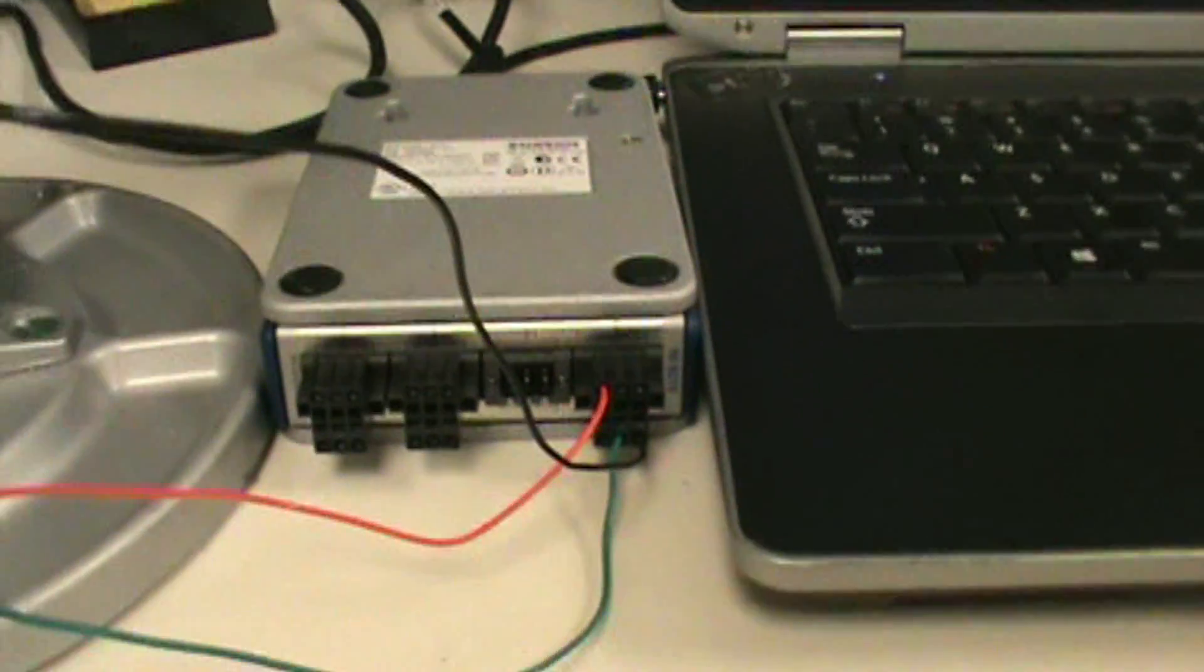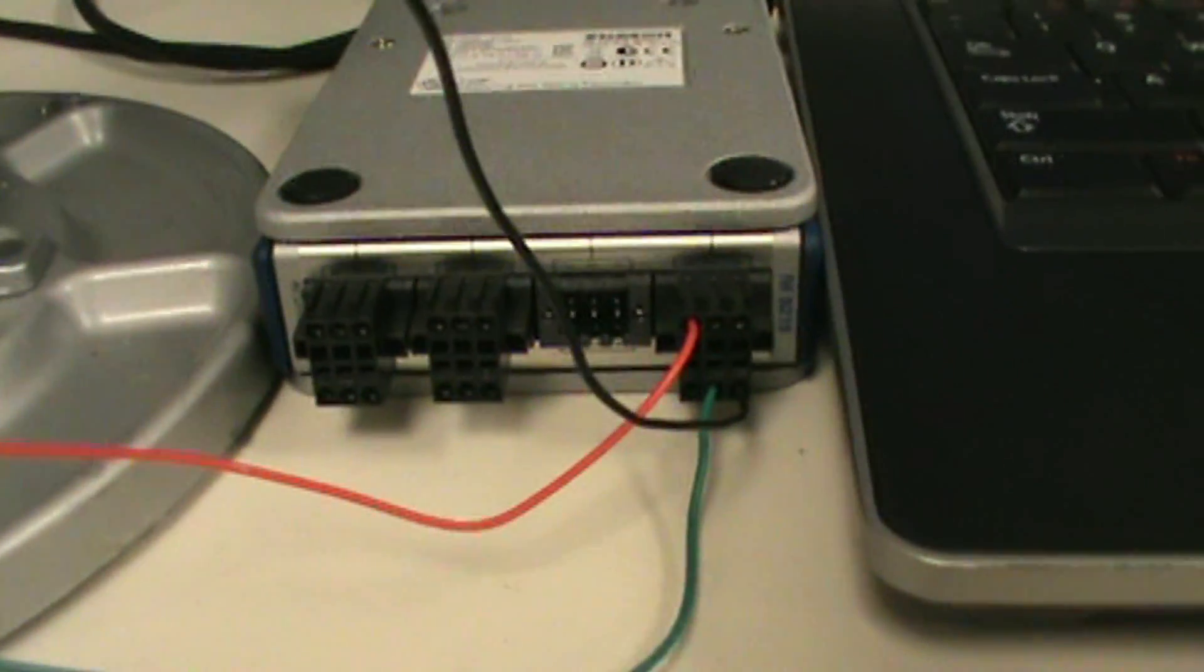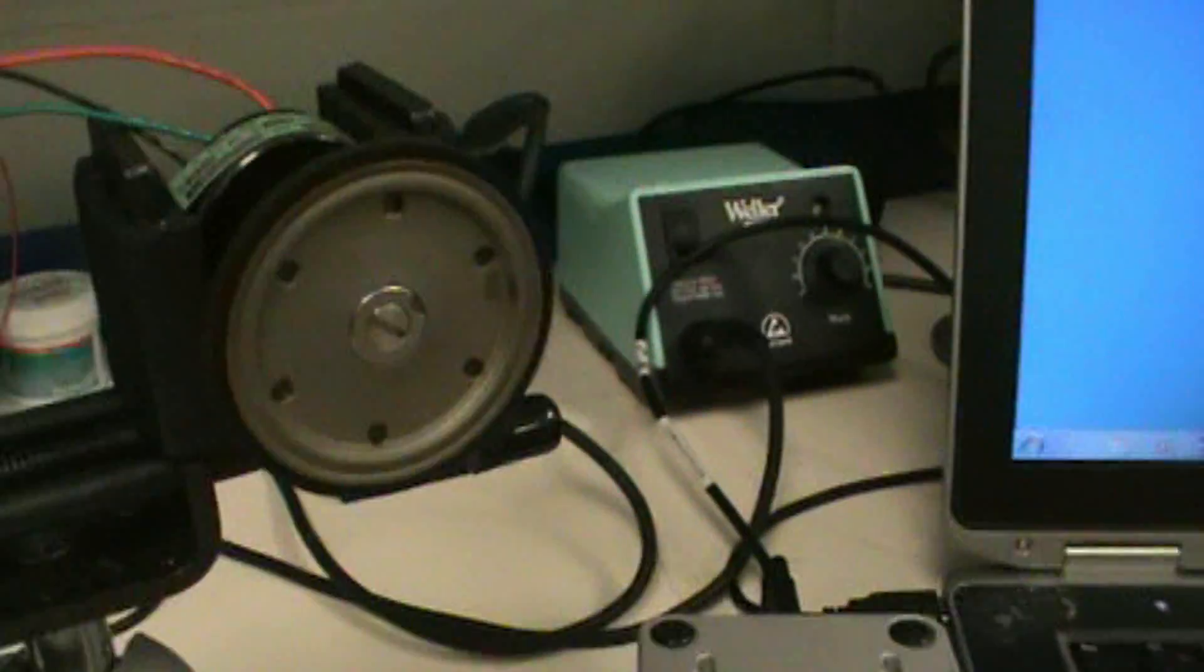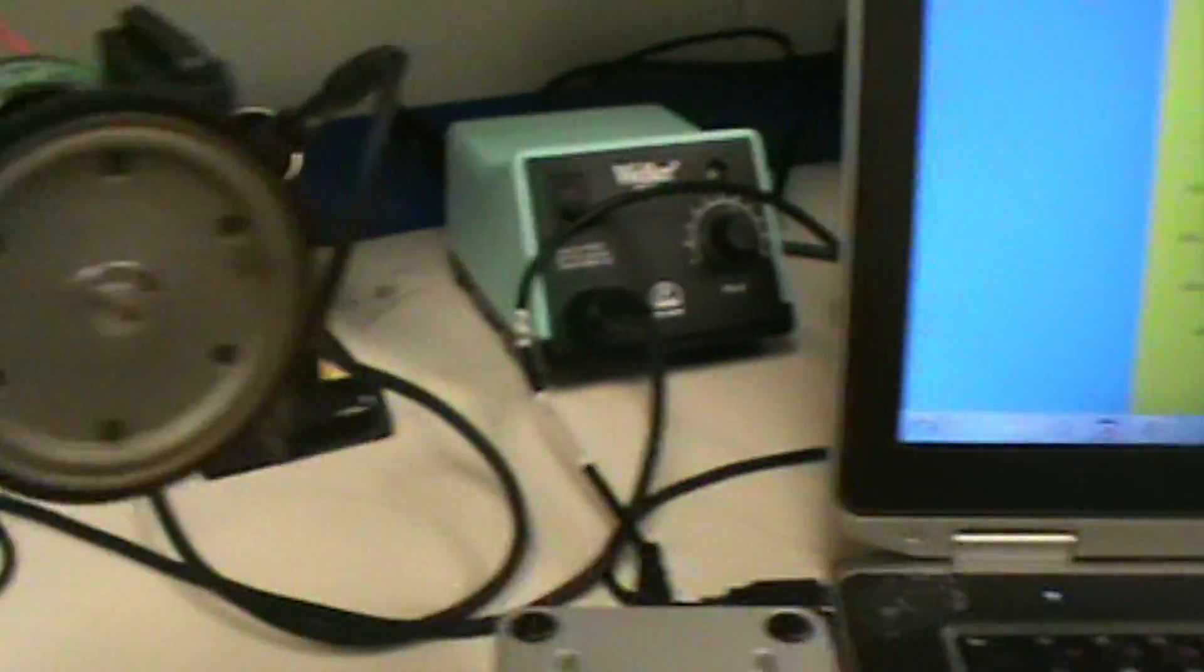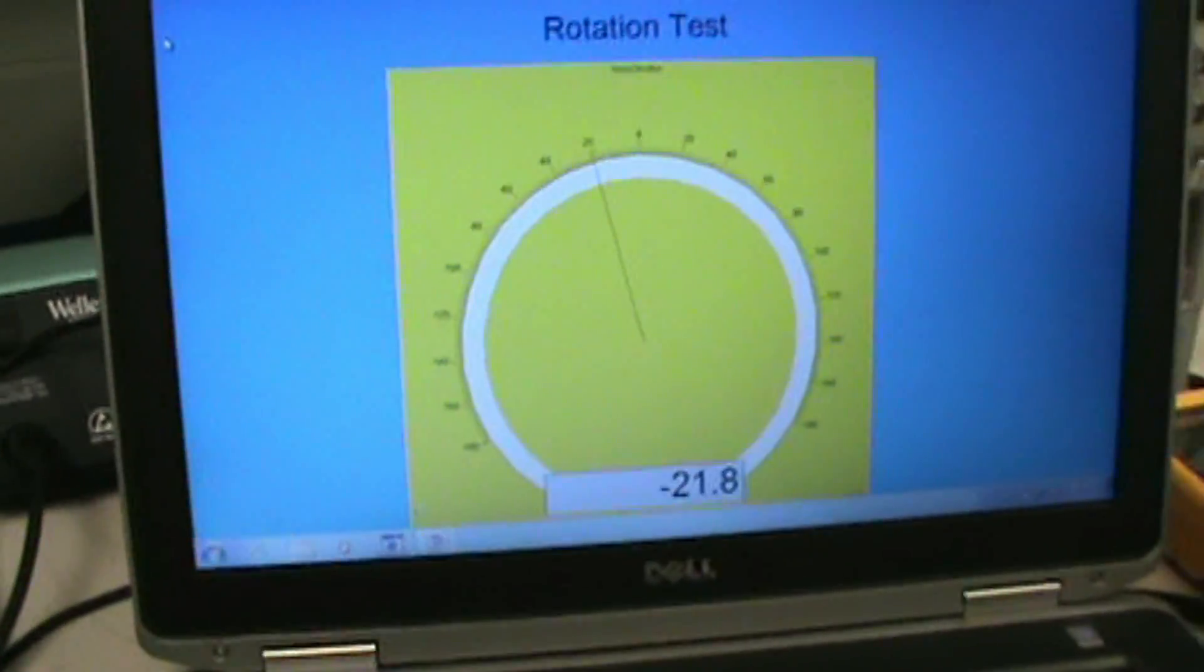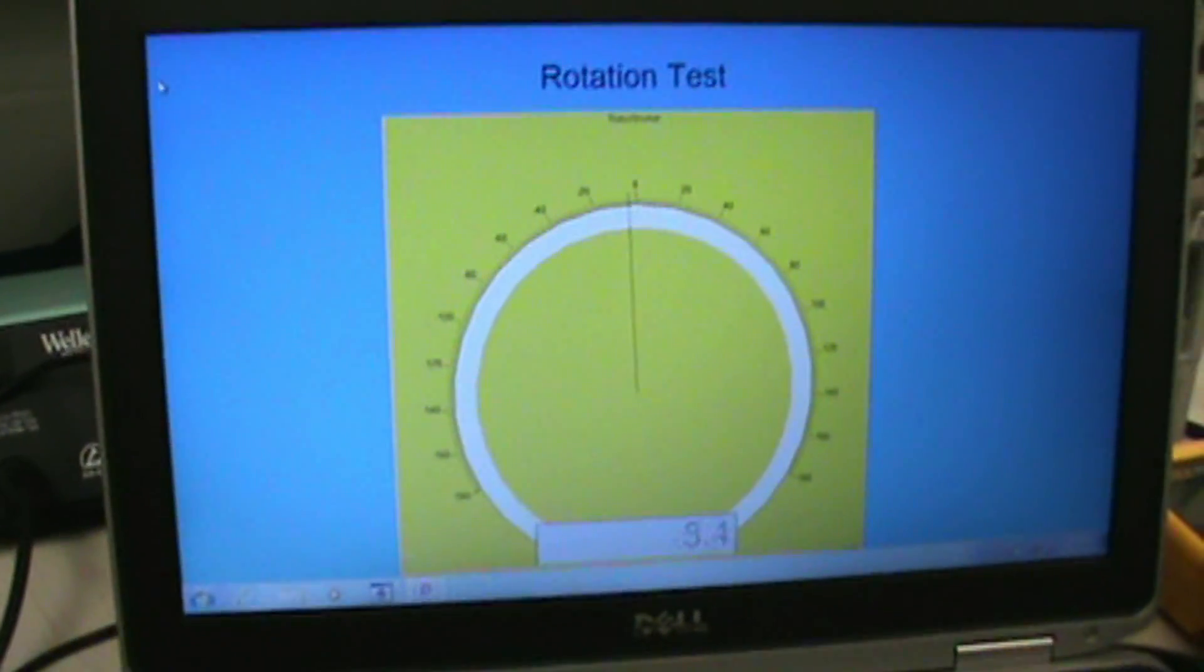I'm using a National Instruments 9219 universal module, so that's providing the power and the input for our potentiometer. Over here we have a PC monitoring the position. As you see, when I turn this you see a little needle moving.